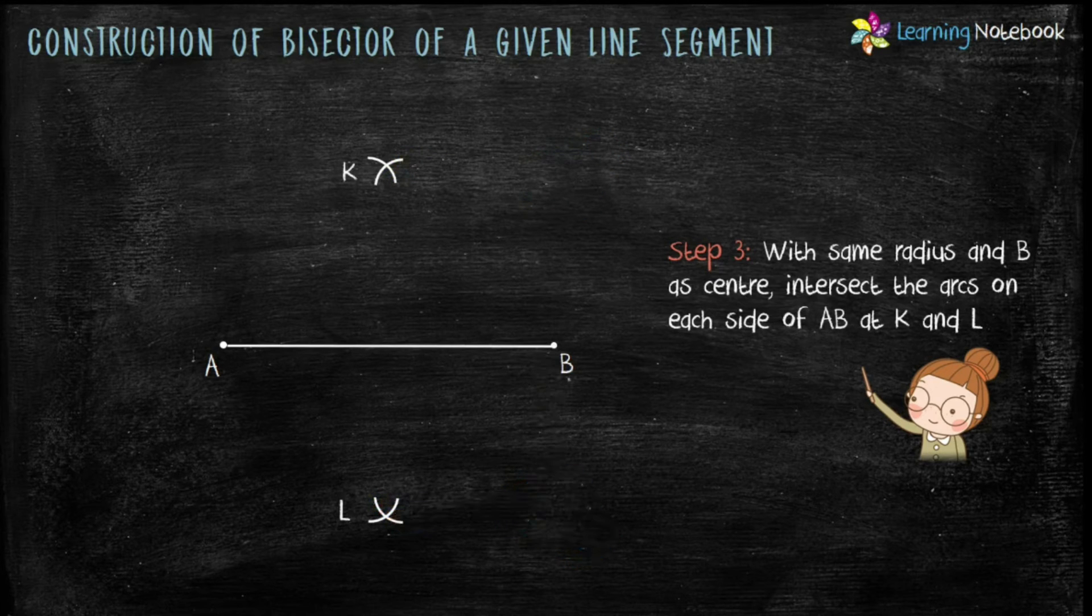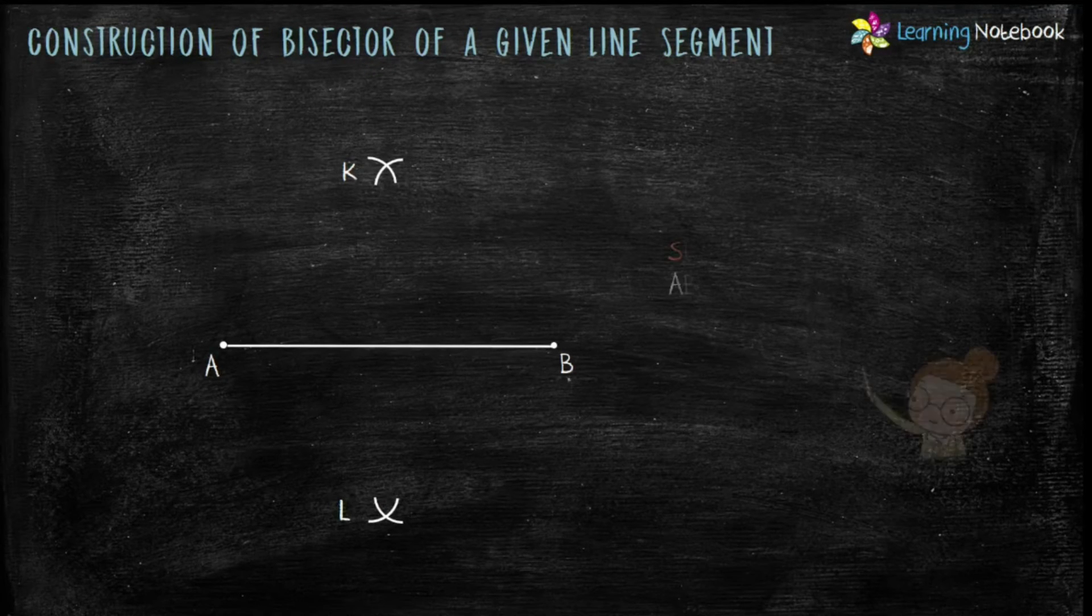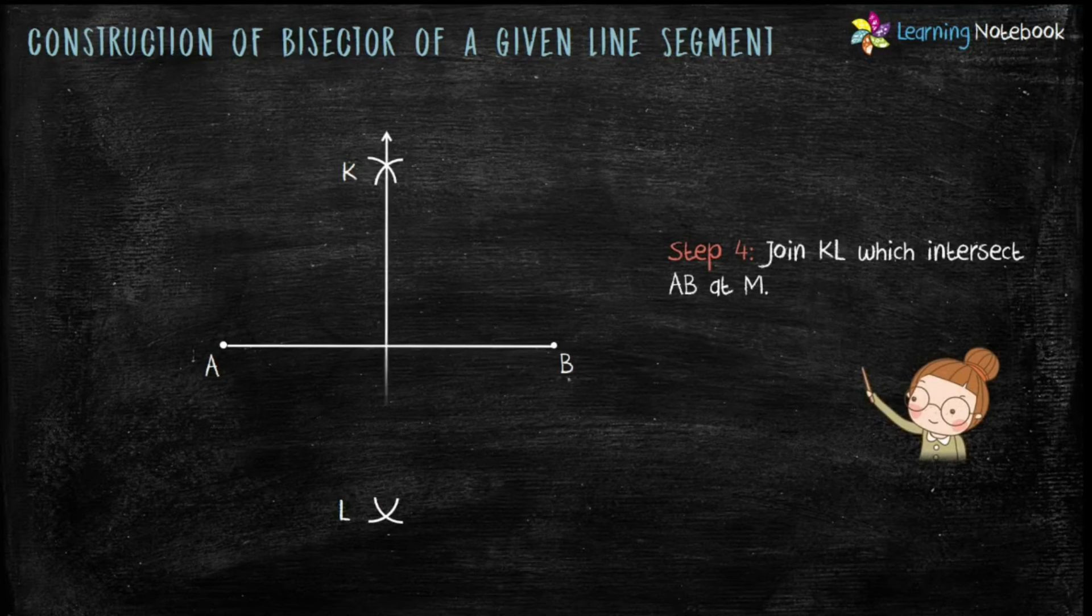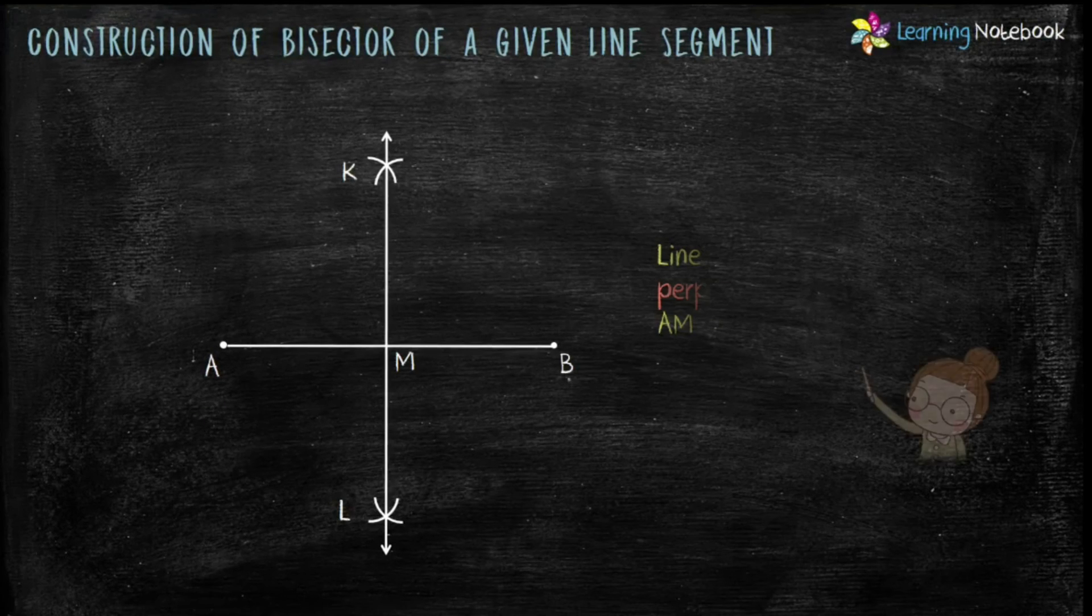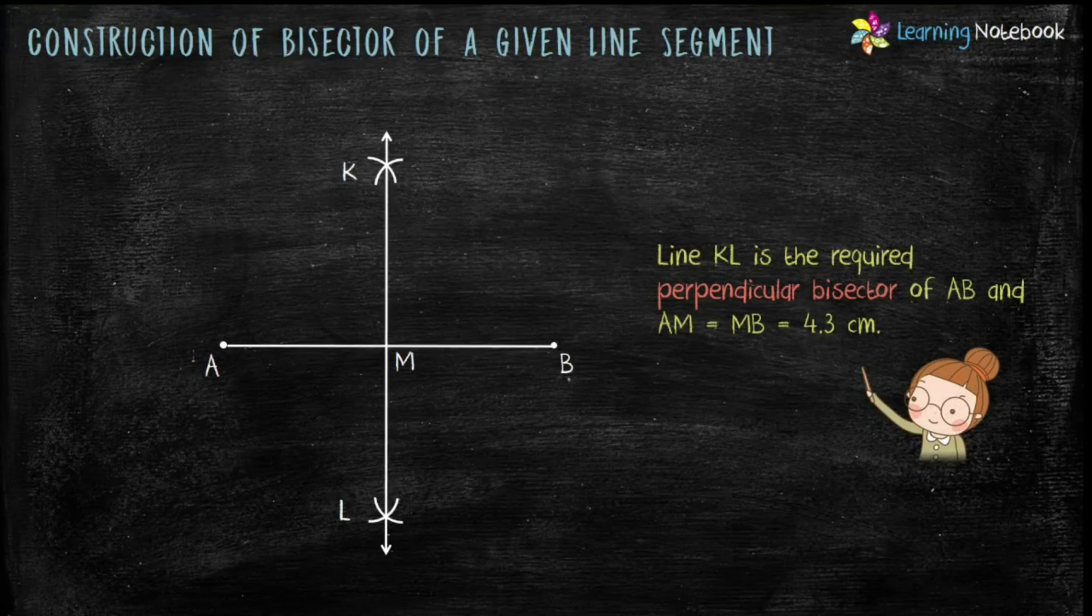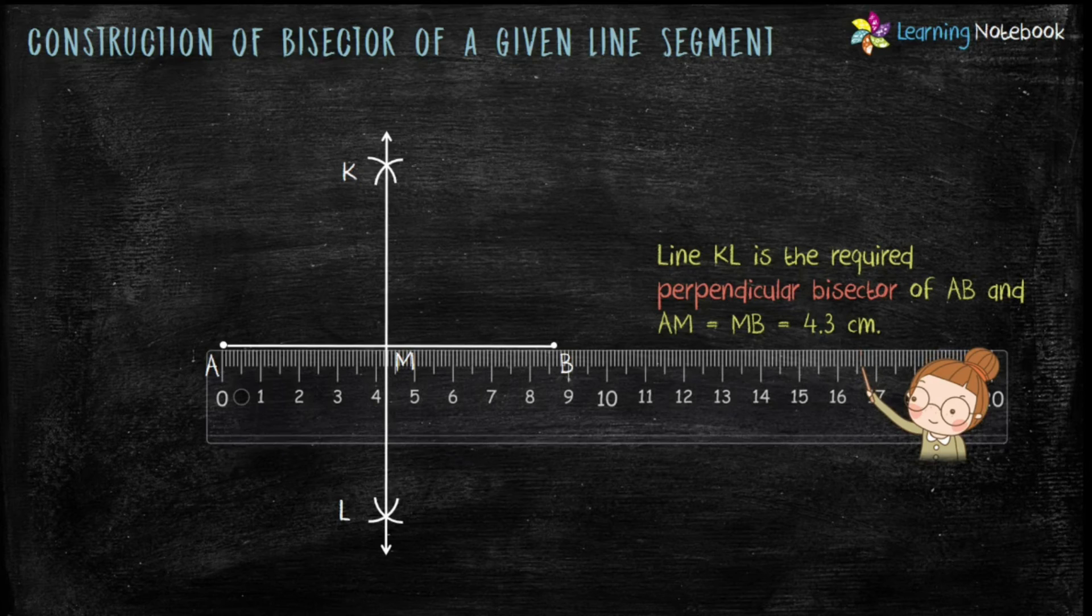Now in next step, join KL which intersect line segment AB at point M. So students, line KL is the required perpendicular bisector of AB and AM equals to MB which is equals to 4.3 centimeter.